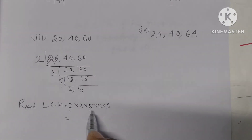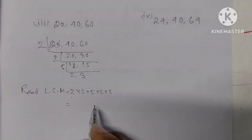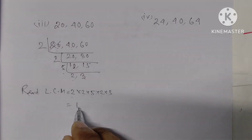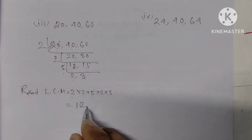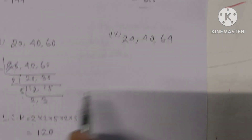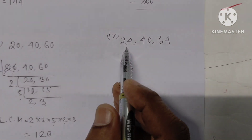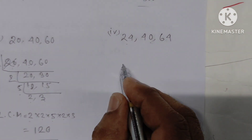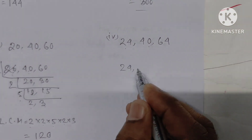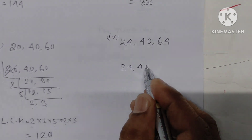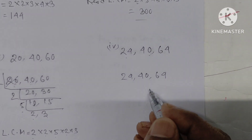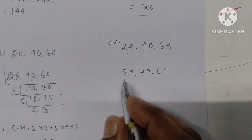The LCM comes out to 120. Next, we solve for the set: 24, 40, and 60.